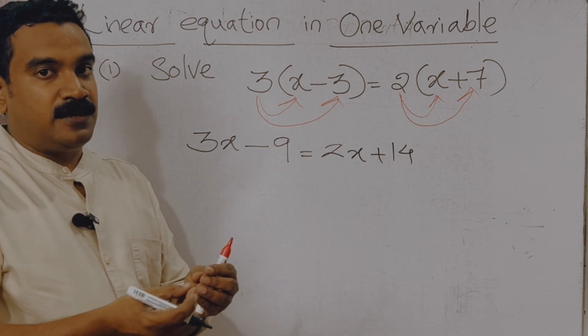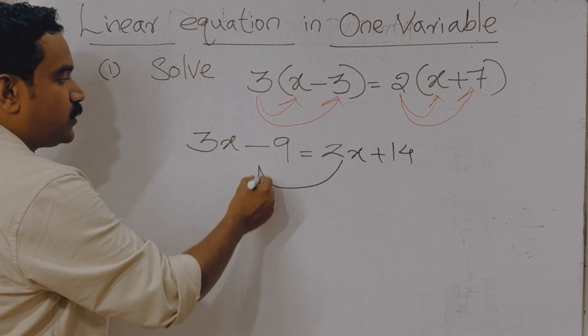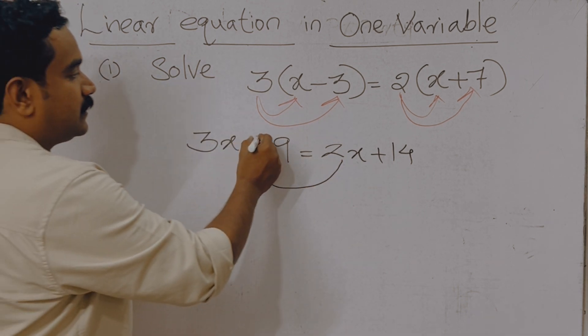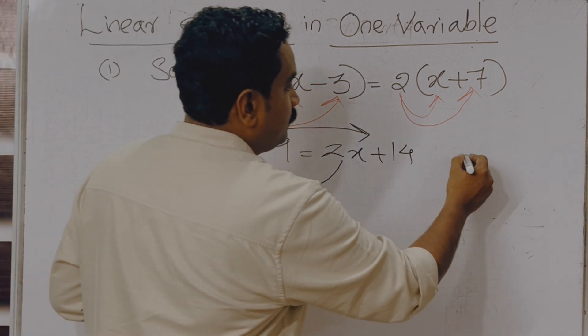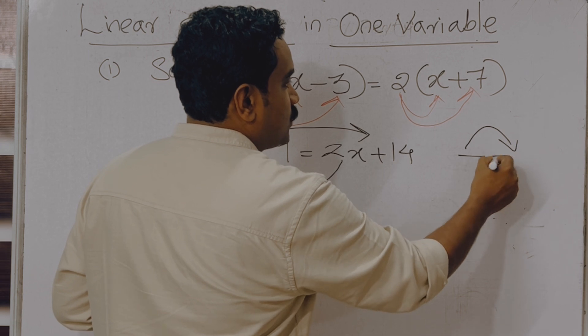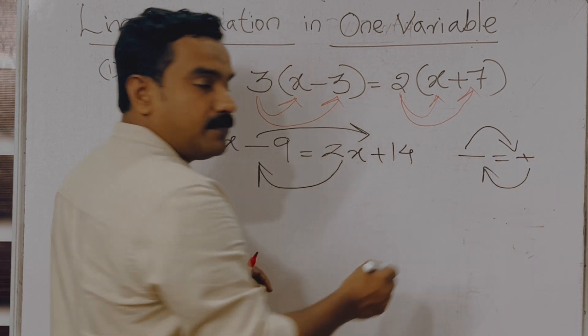Then bring all the variables to one side and the constants to another side. We can take this positive 2x to the left side and we can take this negative 9 to the right side. There is a transformation rule. If you take the negative to the other side of the equation, it becomes plus. If you take the positive, it becomes minus.